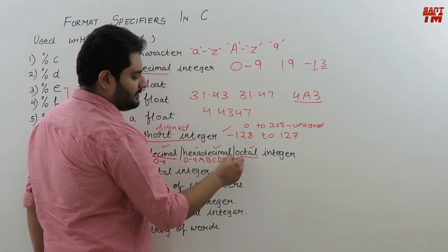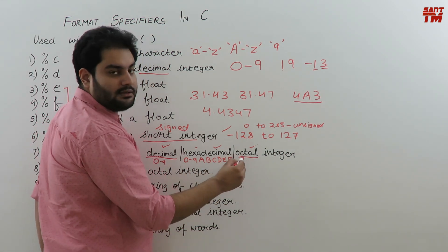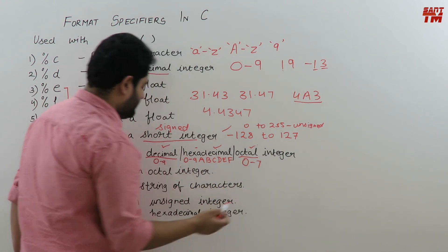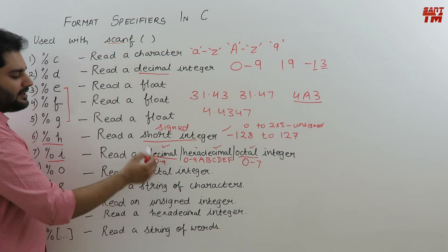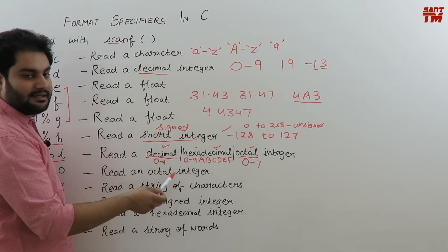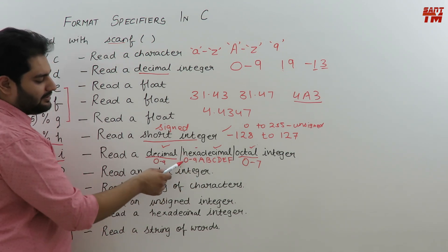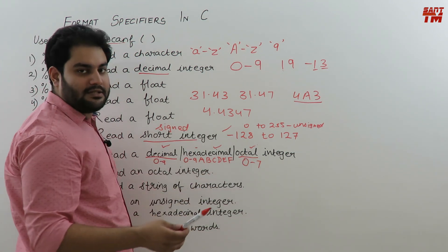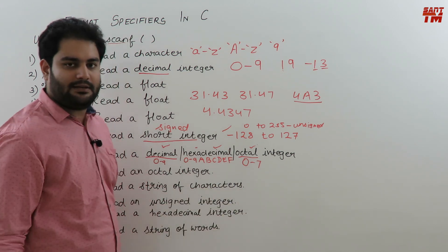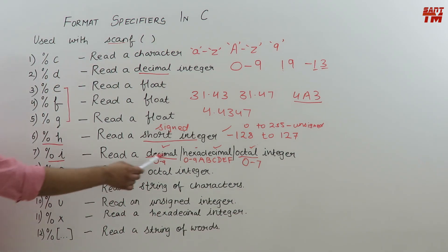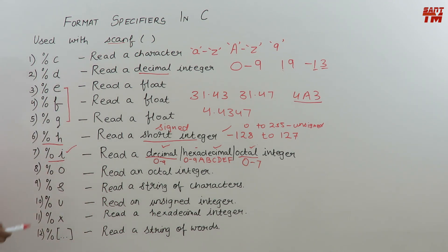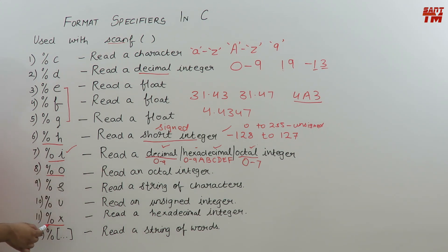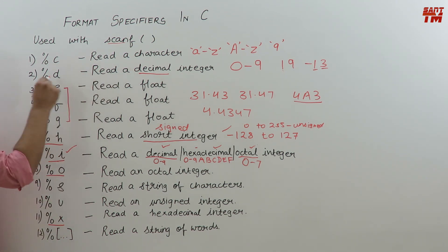An octal integer is built using digits 0 to 7. Decimal means base 10 — 10 digits available. Hexadecimal means base 16 — 16 digits available (0-9 plus a-f). Octal means base 8 — 8 digits (0-7) available. So decimal, hexadecimal, and octal can all be read using %i. If you want to specifically read an octal integer use %o, for hexadecimal use %x, and for decimal use %d. %i is common for all three.